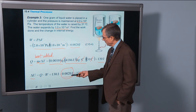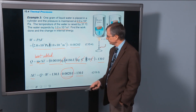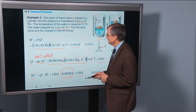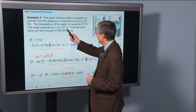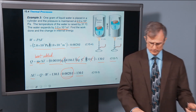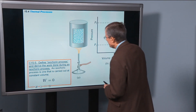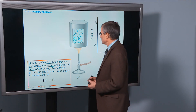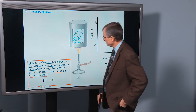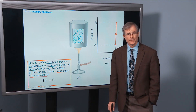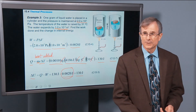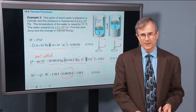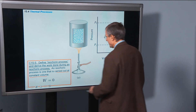Had we done this experiment with gas instead of water, the change in volume would be much larger and the work done would play a bigger role. Now let's define an isochoric process. Iso means same, choric means volume, so an isochoric process is carried out at constant volume. The work done is zero — since the volume is constant, there's no expansion or contraction, and no work is done.